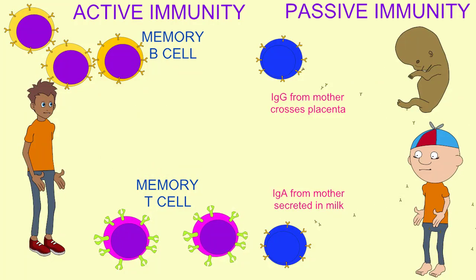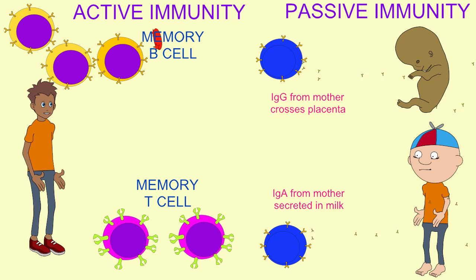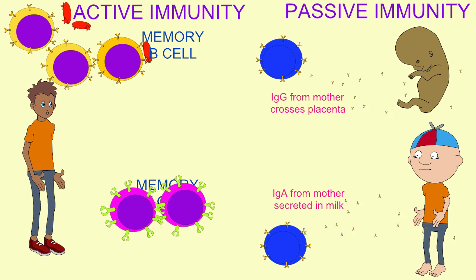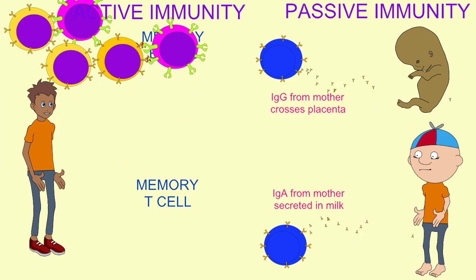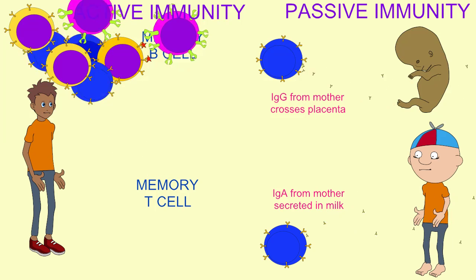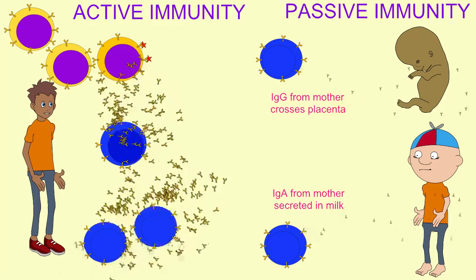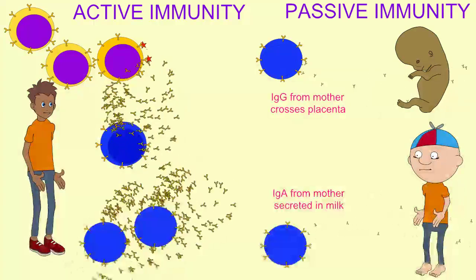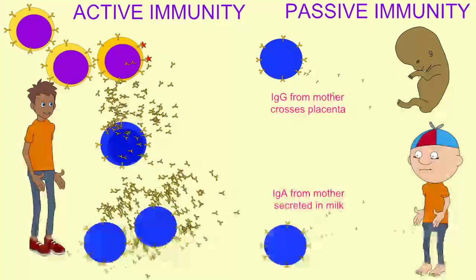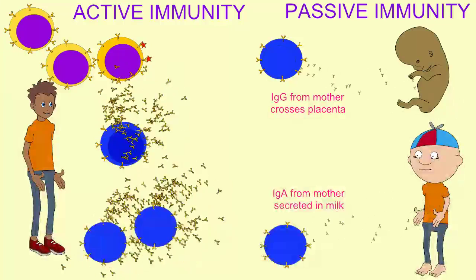antibodies are eliminating an antigen, but in a way that does not generate memory cells and will not make subsequent reactions with this antigen more enhanced. Another example of passive immunity would be the receiving of a gamma globulin shot from a physician.